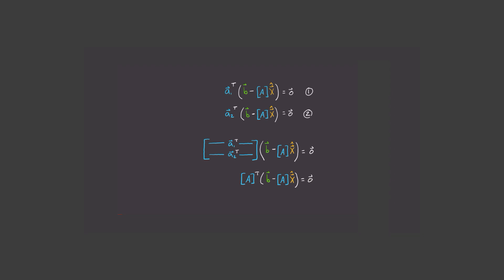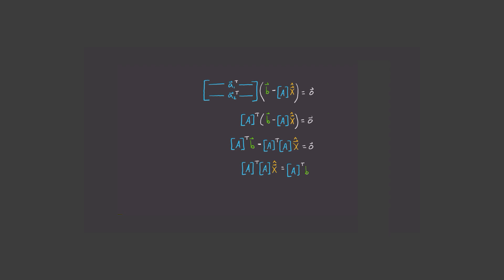This is the equation that we've been looking for. We need to solve this to find x hat. If we expand the brackets, we get A transpose B minus A transpose Ax hat is equal to 0. And if we bring one term over to the right-hand side, we get A transpose Ax hat is equal to A transpose B.